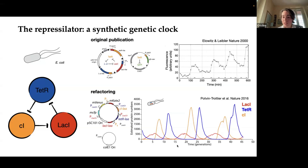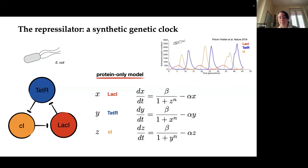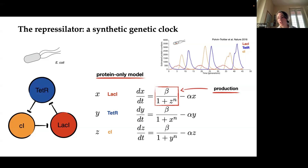To formulate the behavior of this circuit from a mathematical point of view, we used a system of protein-only differential equations. The reason we are able to make this work, looking just at the proteins and not at the dynamics of the mRNA, is exactly because the oscillation period of the system is on the order of hours, so there is no fast dynamics in it. We have these three symmetrical equations. Each equation represents the change in concentration of one of the proteins over time. The first part represents the protein production as a classical repressor function, while the second part represents the dilution of the protein caused by growth.